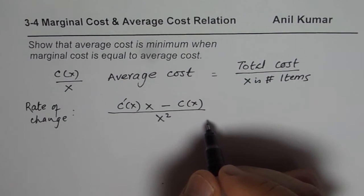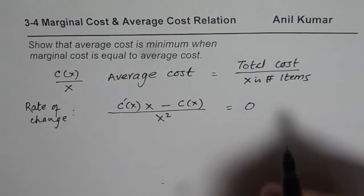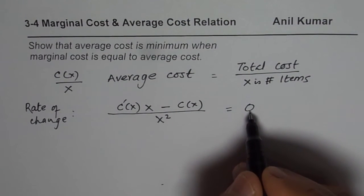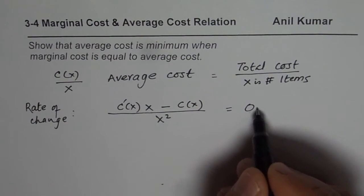Now, to find the maximum or minimum value, what should we do? That should be equal to 0. So then if the rate of change of the average cost is 0, then we really get maximum or minimum value. So that is what we have. It's a turning point.